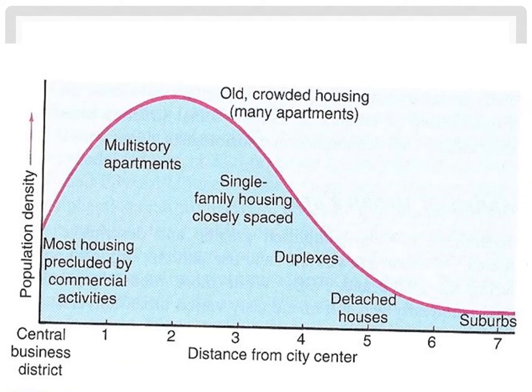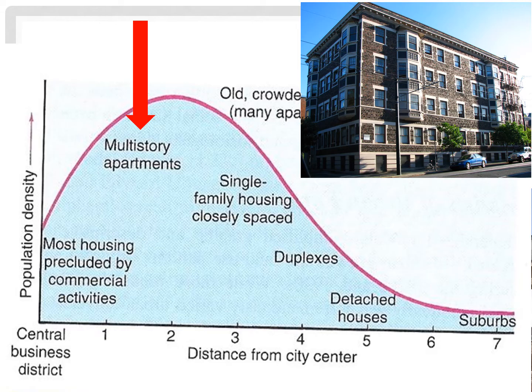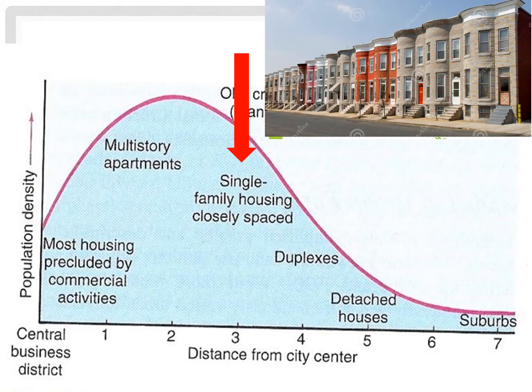Relatively few people live in the CBD, where land costs are so high that they're outbid by commercial activities. But those that do live in the CBD may live in apartments at the top of skyscrapers. Then, as you get further from the CBD, we see multi-story apartment buildings with very high population densities. Then, single-family structures that are spaced close together — row houses are a common name for these buildings that feature single-family units attached to one another in a row.